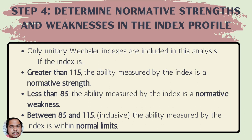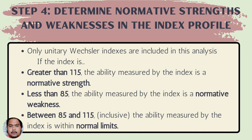Step 4: Determine normative strengths and weaknesses in the index profile. Interpret the FSIQ or GAI and write it in a paragraph, including percentile rank, 95% confidence interval, and descriptive category. Only unitary Wechsler indexes are included in this analysis. If an index score is greater than 115, the ability measured is a normative strength. If less than 85, it is a normative weakness. Between 85 and 115 inclusive, the ability is within normal limits.